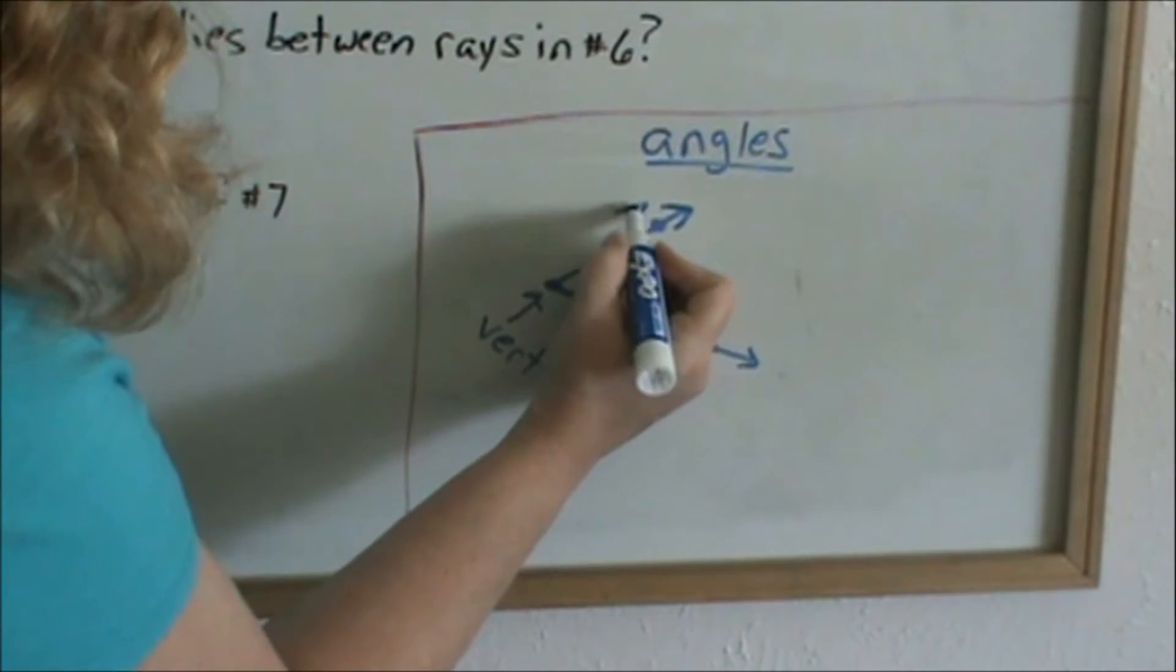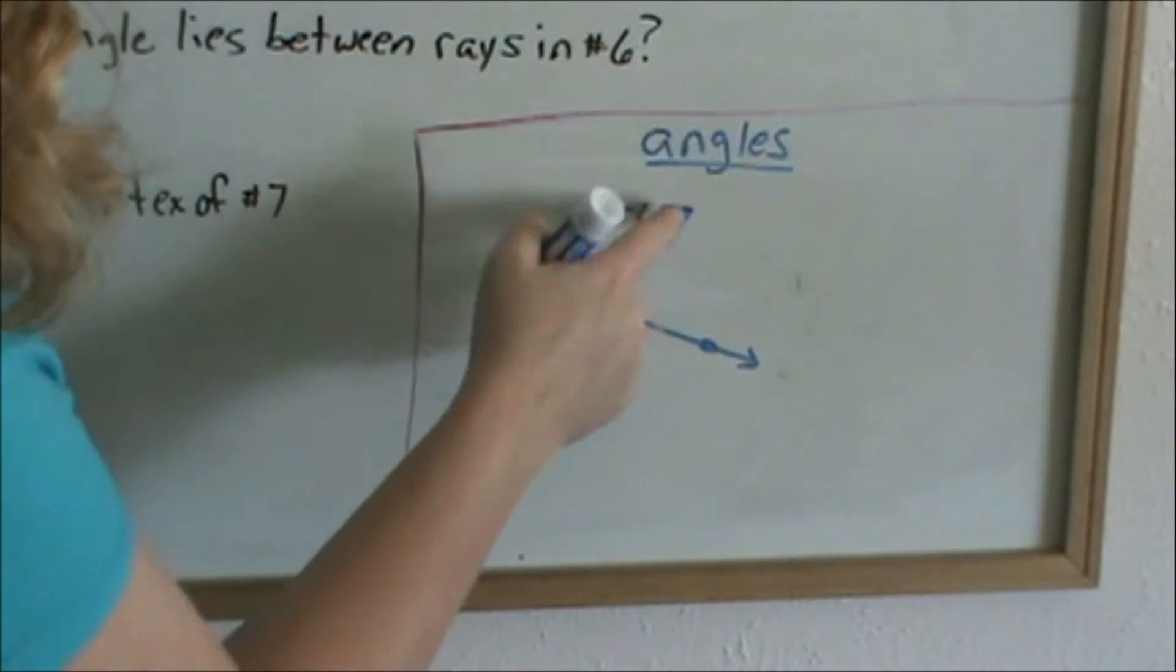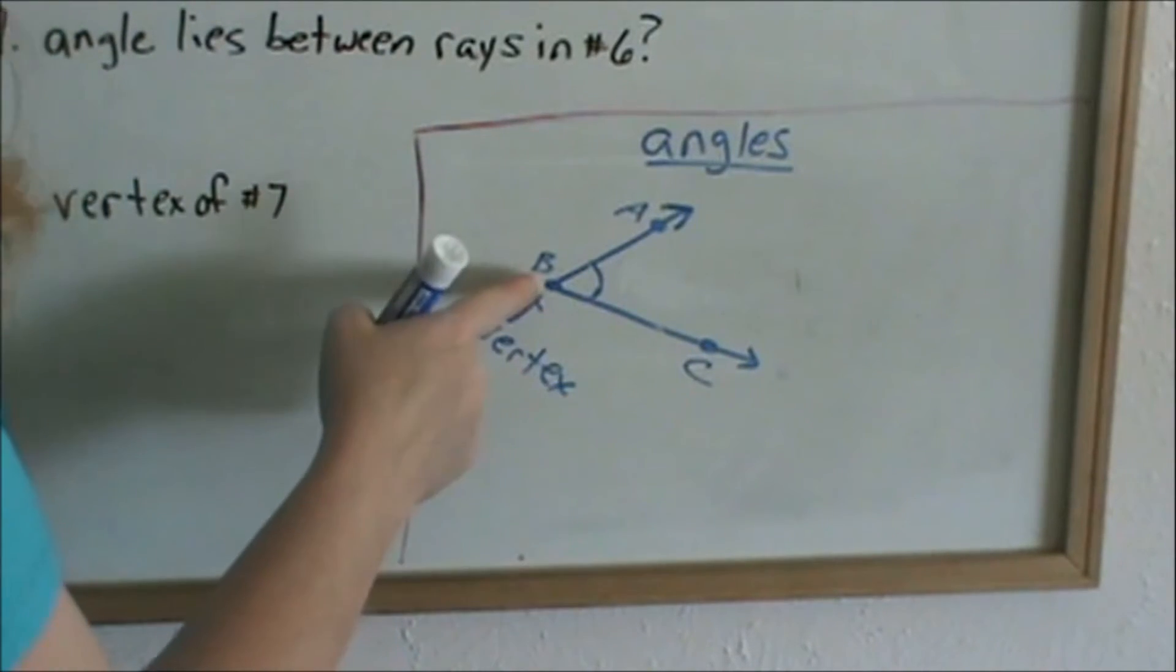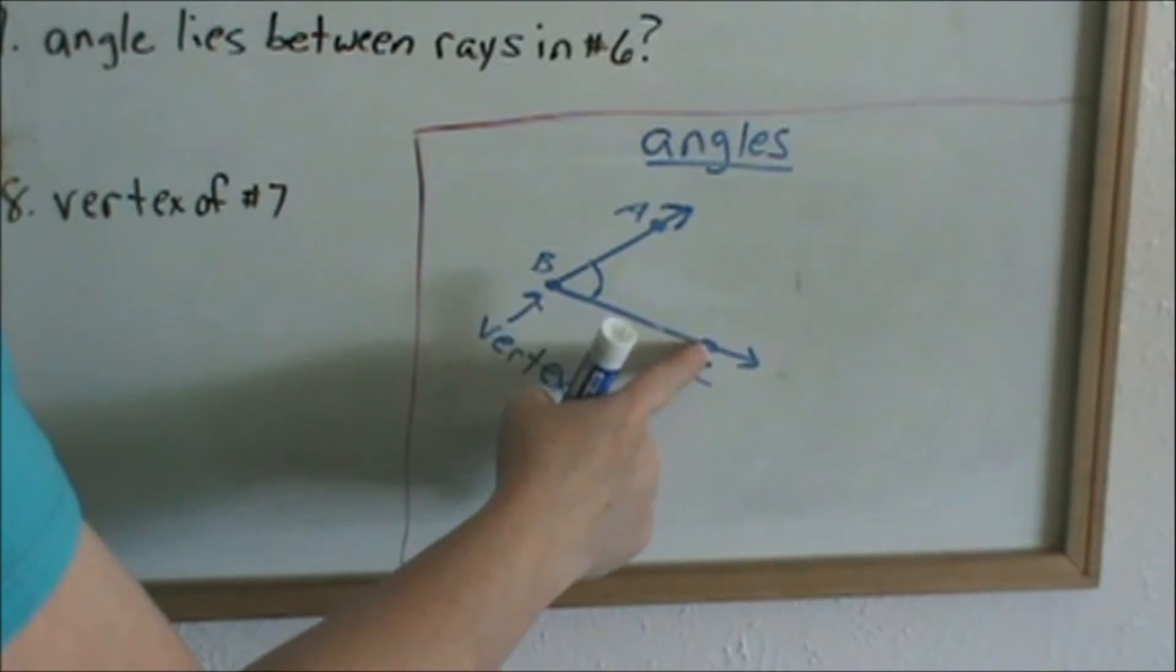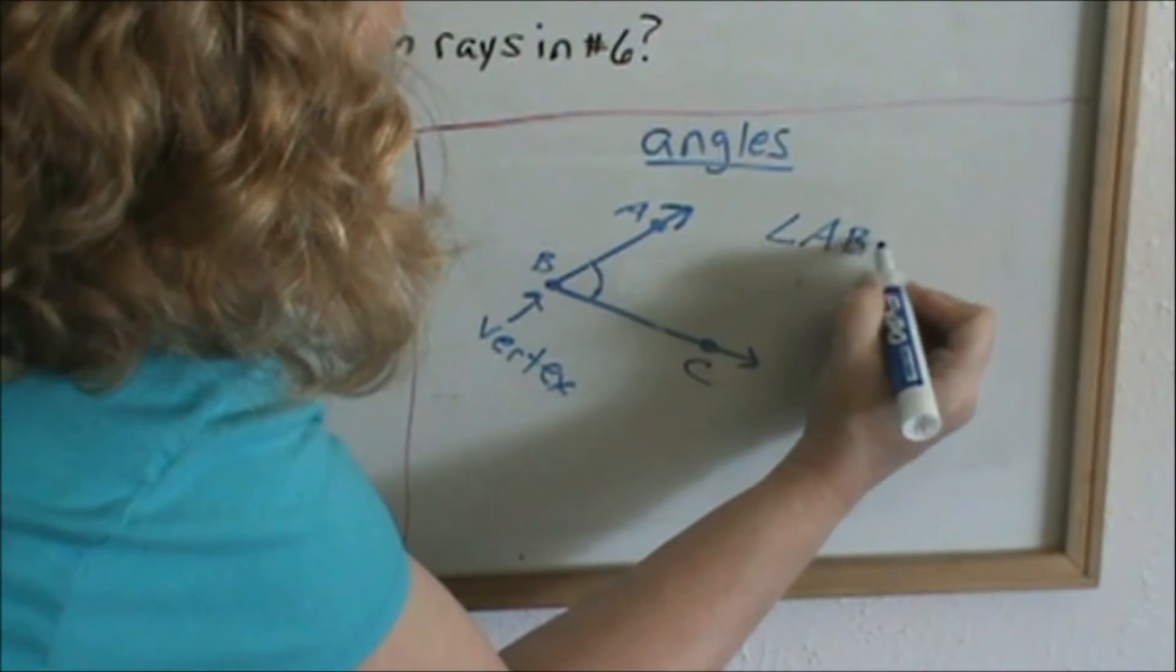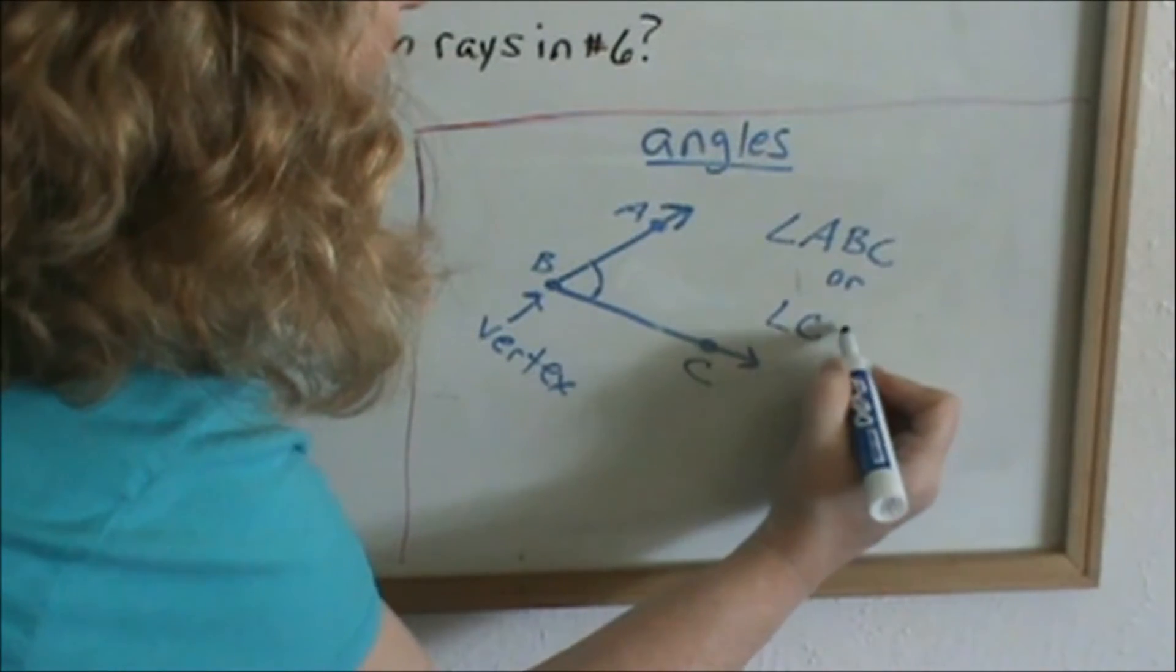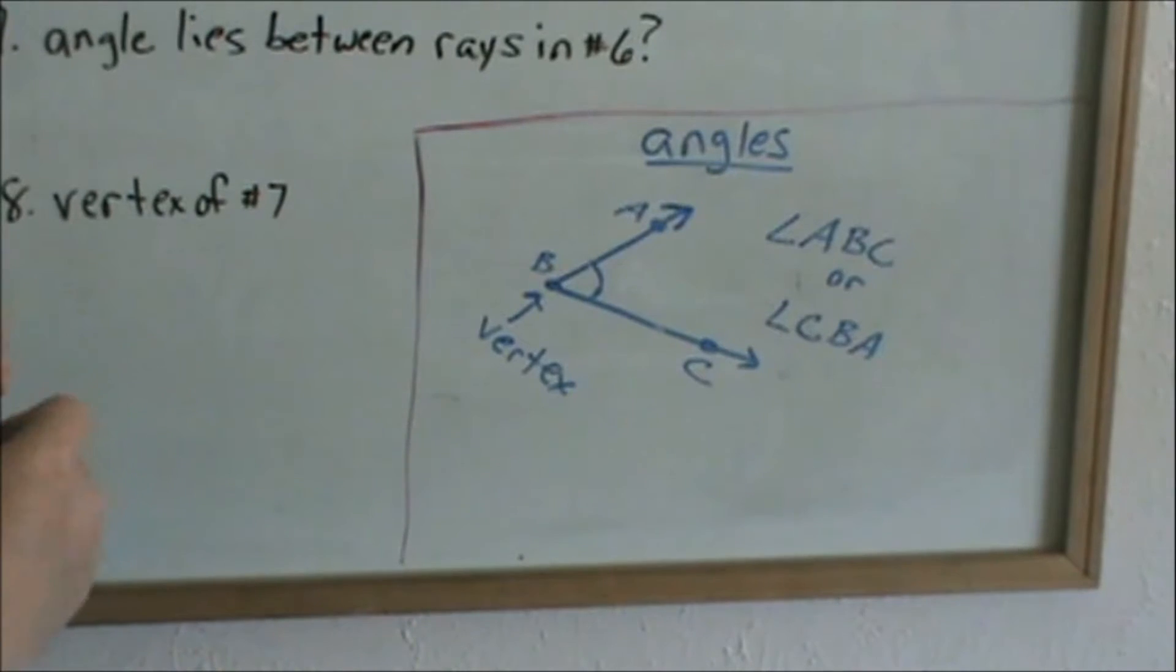And they're going to be three letters. Let's say this is A, B, because that was ray B, A, and then we put it together with ray B, C. So ray B, A, we've joined ray B, A with B, C to make angle A, B, C. This would be called angle A, B, C, or angle C, B, A. Those are two different ways you can name the angle.